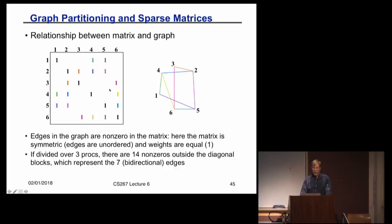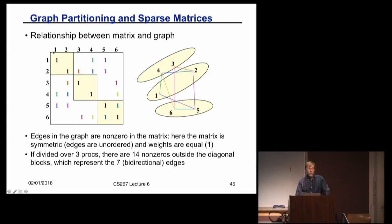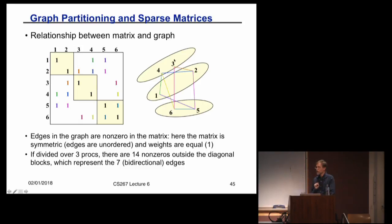What I want to do is partition — break this matrix up — and that's going to be the same thing as partitioning that graph. Suppose I partition the matrix by breaking it into the first two rows, the next two rows, and the next two rows. In graph partitioning terms, I've grouped rows and columns one and two together as one partition, rows three and four as another, and rows five and six as another.